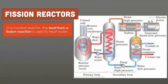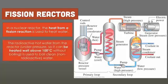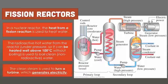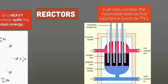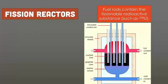Fission reactors, however, use a controlled environment. In a nuclear reactor, the heat from a fission reaction is used to heat water. The radioactive hot water from the reactor under certain pressure is used to boil clean water, which is non-radioactive. The clean steam is used to turn the turbine which then generates the electricity. Fuel rods contain the fissionable radioactive substance such as uranium-235. This is the type of fuel that we use inside of all of the nuclear power plants in America.